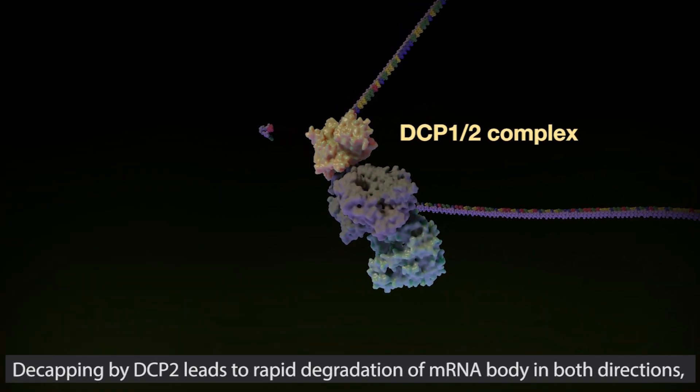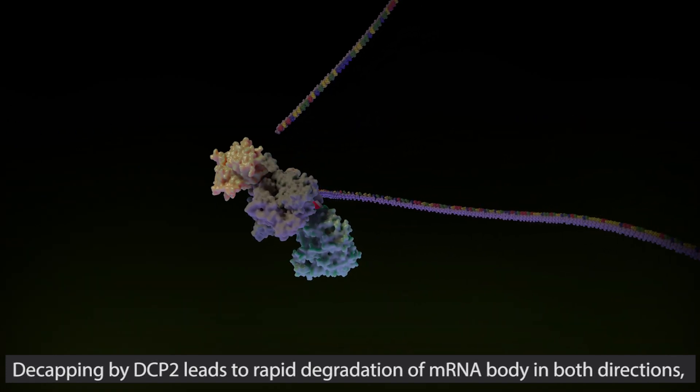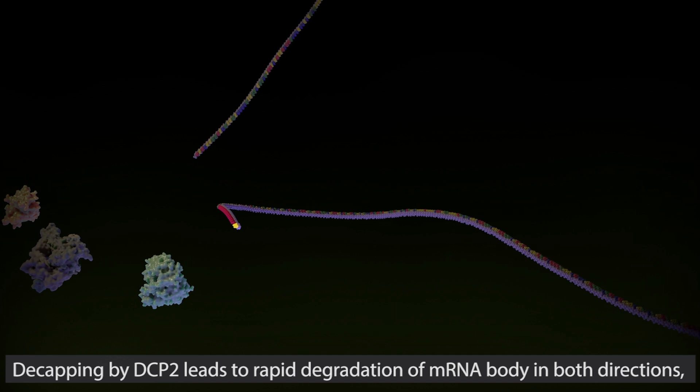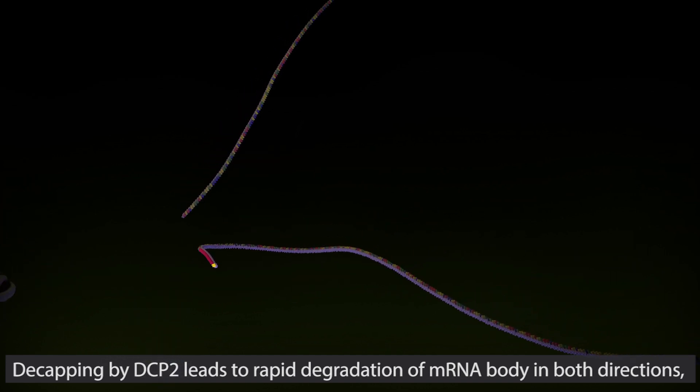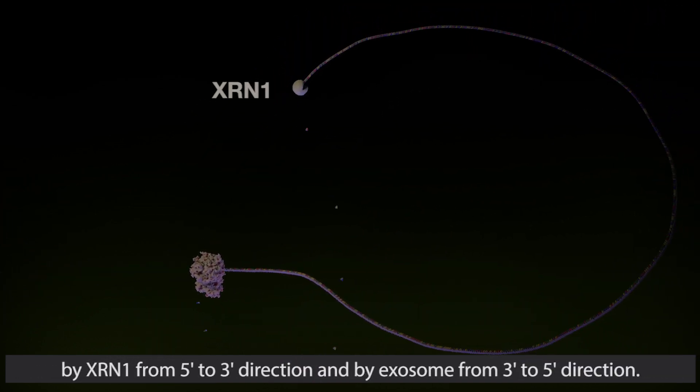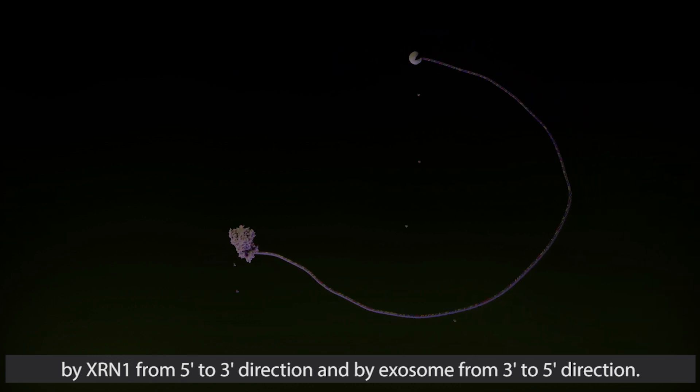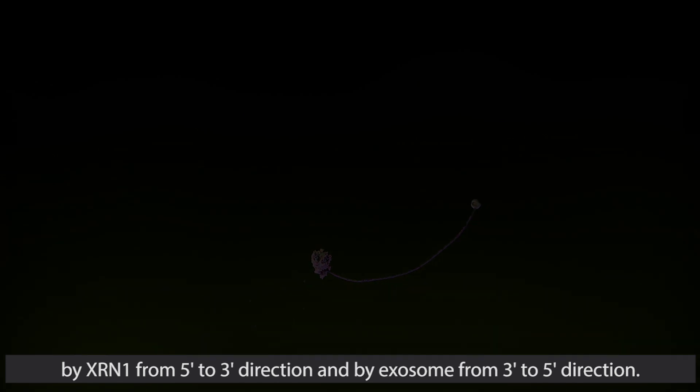Decapping by DCP2 leads to rapid degradation of mRNA body in both directions. By XRN1 from the 5' to 3' direction, and by exosome from the 3' to 5' direction.